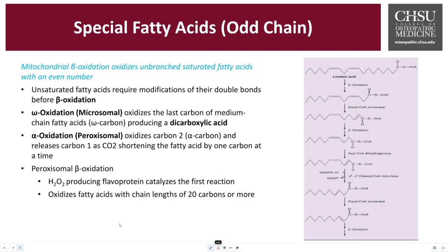It should be noted that unsaturated fatty acids may require modification to their double bonds. Omega oxidation happens primarily in the microsomal region, in the endoplasmic reticulum, and produces a byproduct of dicarboxylic acids. Alpha oxidation happens in the peroxisome organelle and oxidizes carbon 2, the alpha carbon, releasing one CO2. Peroxisomal oxidation produces H2O2 as a byproduct and can catalyze fatty acid chains up to 20 carbons in length.